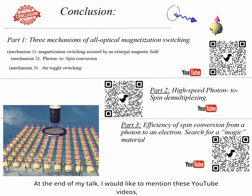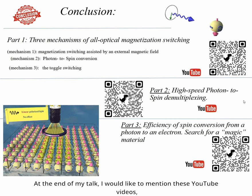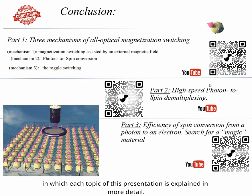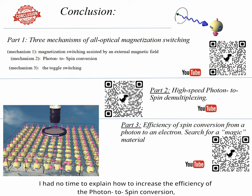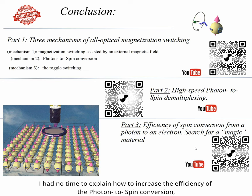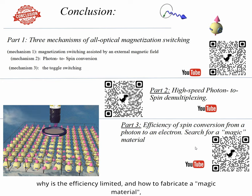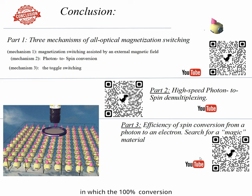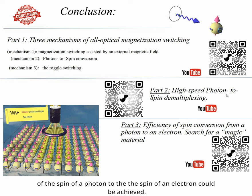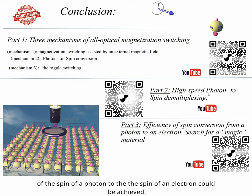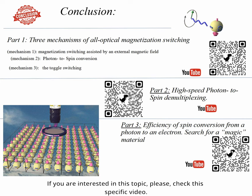At the end of my talk, I would like to mention YouTube videos in which each topic of this presentation is explained in more detail. I had no time to explain how to increase the efficiency of the photon-to-spin conversion, why the efficiency is limited, and how to fabricate a material in which 100% conversion of the spin of a photon to the spin of an electron could be achieved. If you are interested in this topic, please check the specific video. Thank you.